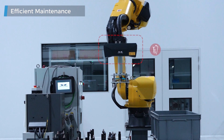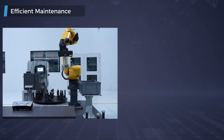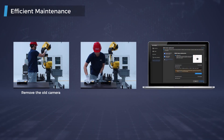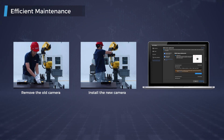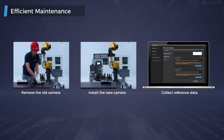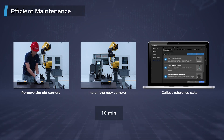If the camera is bumped during production, simply follow 3 steps: remove the old camera, install the new one, and collect reference data for the new camera. The camera can be quickly replaced in 10 minutes, drastically reducing downtime.